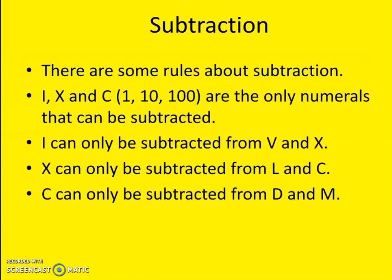Now let's see the subtraction rules. I, X, and C are the only numerals that can be subtracted. I can only be subtracted from V and X — that means from 5 and 10. X can only be subtracted from L and C — that means from 50 and 100. And C can only be subtracted from D and M — that means from 500 and 1000. You have to be very clear with this.